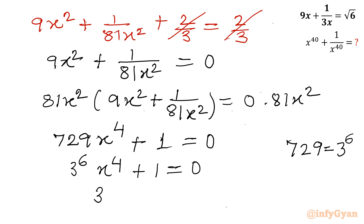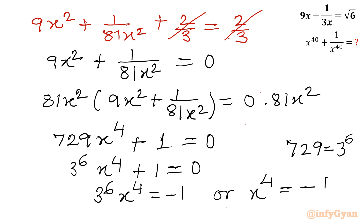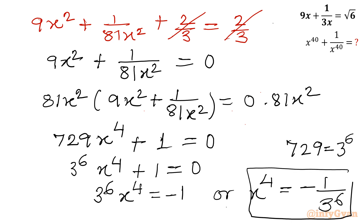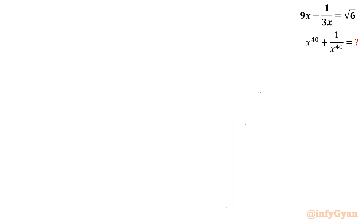Take away 1 from both sides: so 3 power 6 times x power 4 equals negative 1. Or we can write x power 4 equals minus 1 over 3 raised to the power 6. This is our x power 4. Now what we have to evaluate is x power 40 plus 1 over x power 40. So I will consider squaring x power 4 to find x power 8, which will be positive.